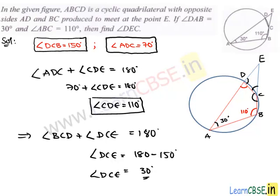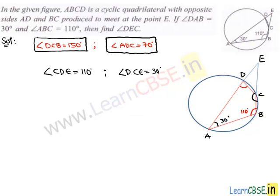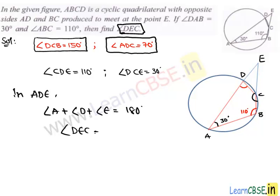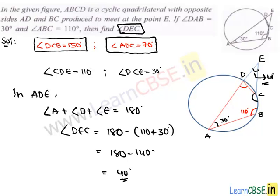We now know two angles of triangle DEC: angle CDE is 110 degrees and angle DCE is 30 degrees. The remaining angle is found by subtracting their sum from 180 degrees. Therefore, angle DEC equals 180 minus 110 plus 30, which is 180 minus 140, giving 40 degrees. Therefore angle DEC is 40 degrees, and this completes our solution.